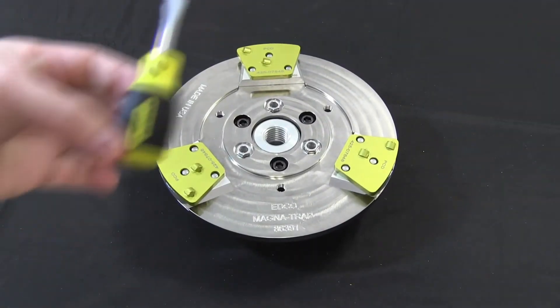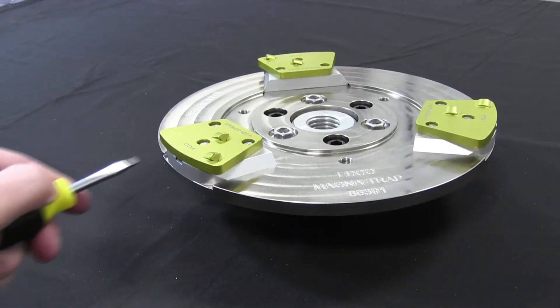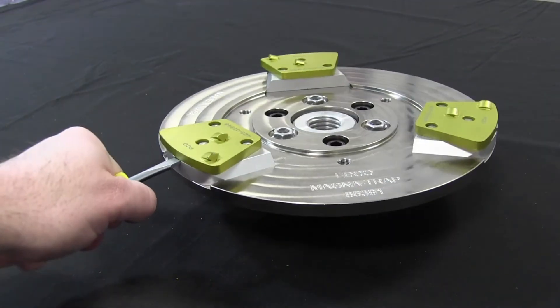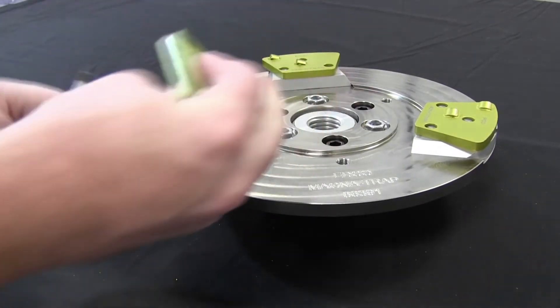To remove trapezoids from the adapter, use a standard flathead screwdriver. Wedge the screwdriver head into the slot between the adapter and the trapezoid using leverage to push the trapezoid away from the adapter magnets.